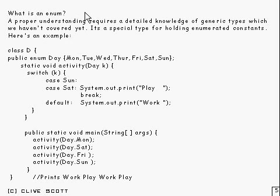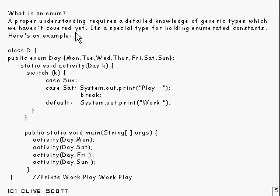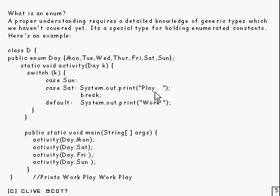Now we come to the enum example. The first question is: what is an enum? Basically, to explain that fully I'd have to go into some clever generic type tricks, but it's probably easier to just show a simple example. Here's a nice simple example: there's an enum Day, and it consists of one of these values. You can use it with labels like Saturday and Sunday, anything else prints out something different, and you refer to any of these items in that enum with a dot followed by the value.